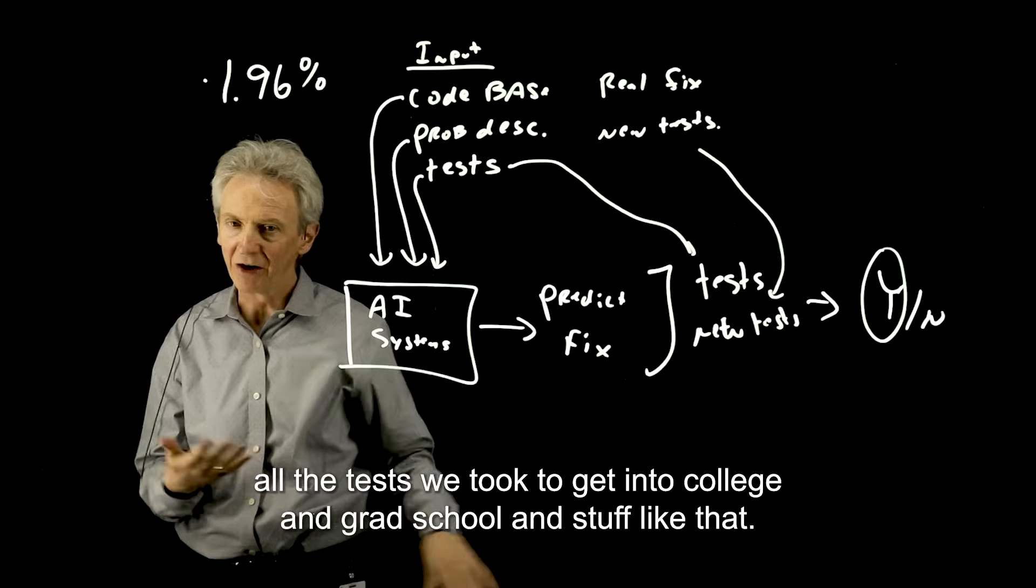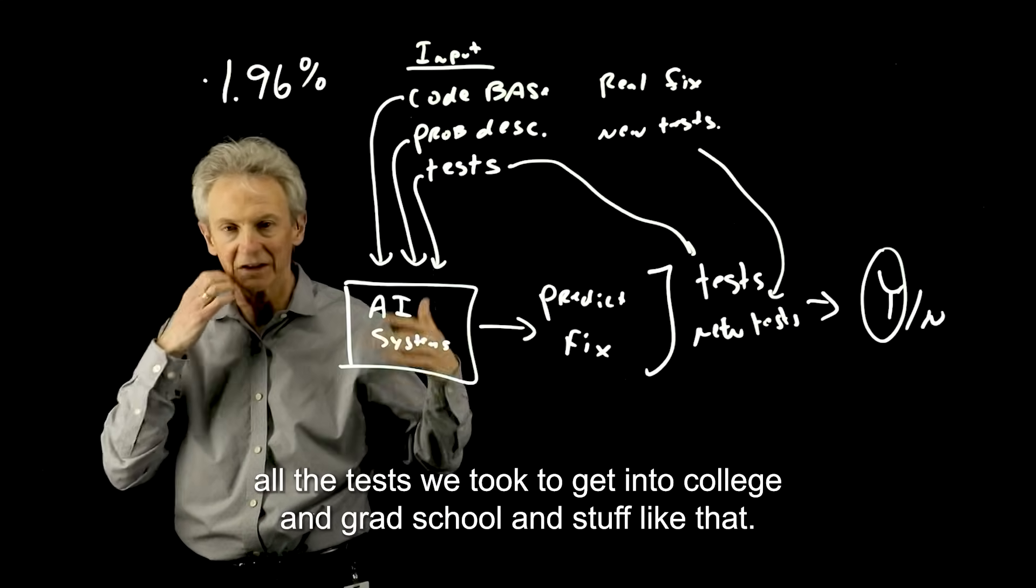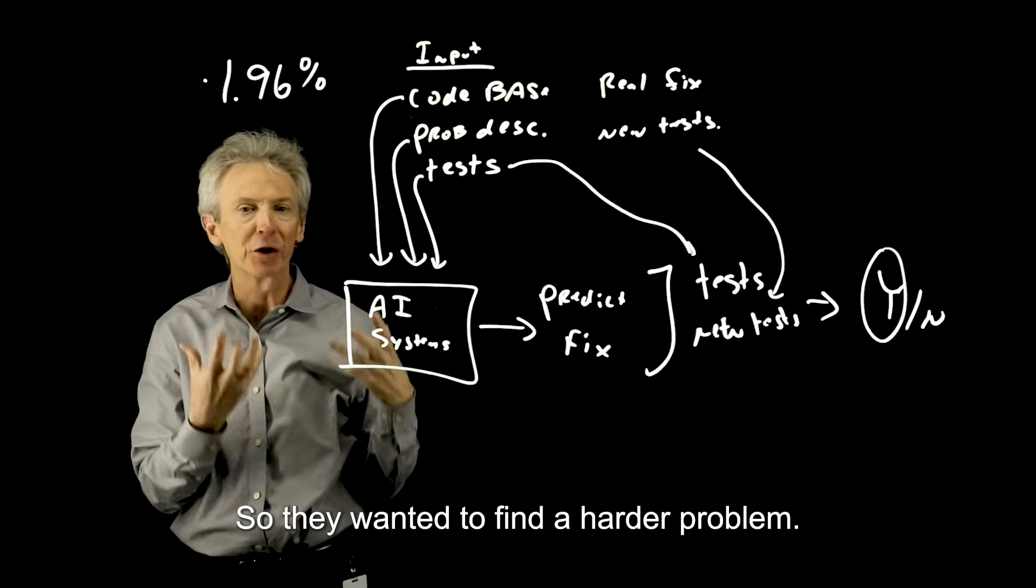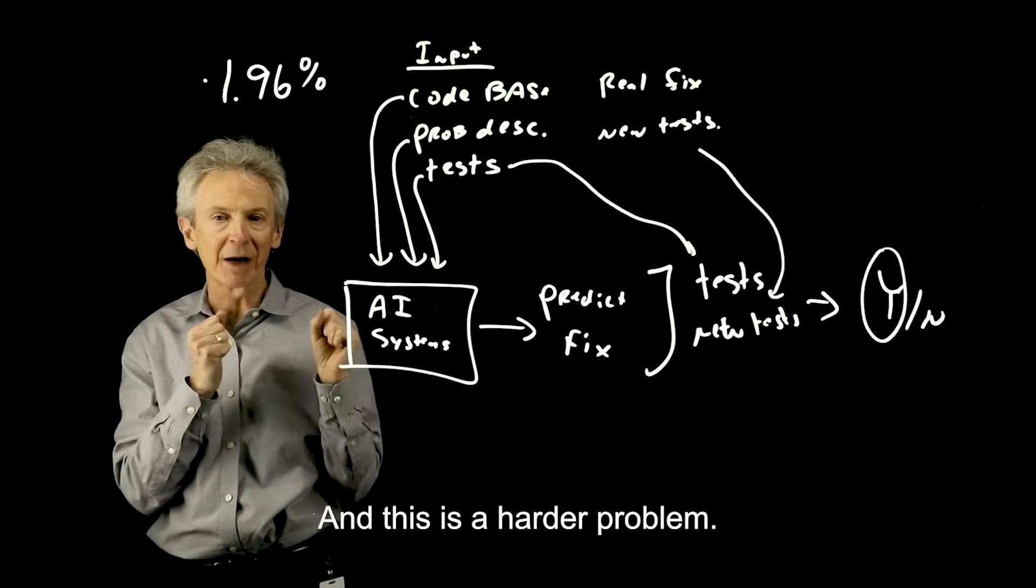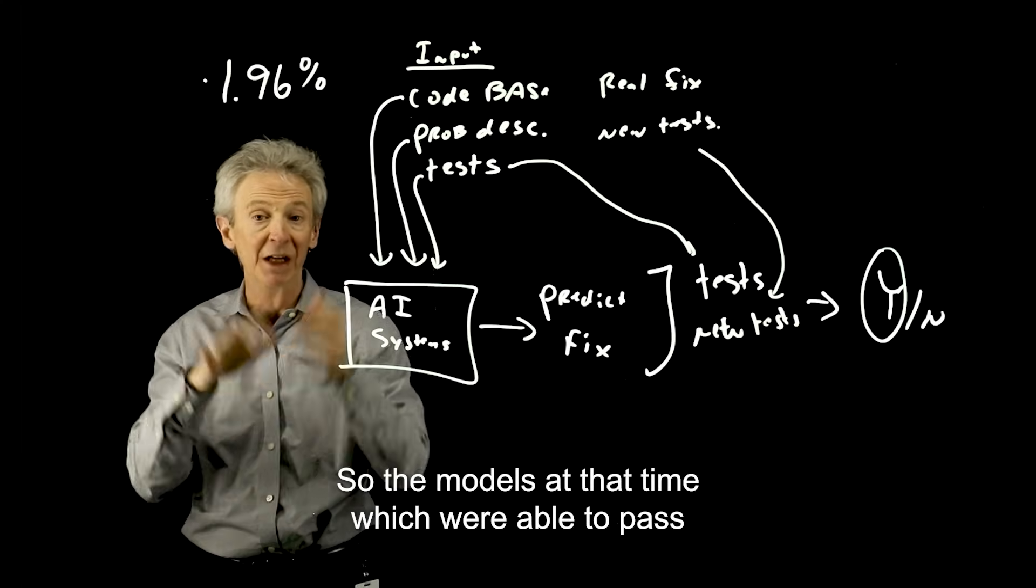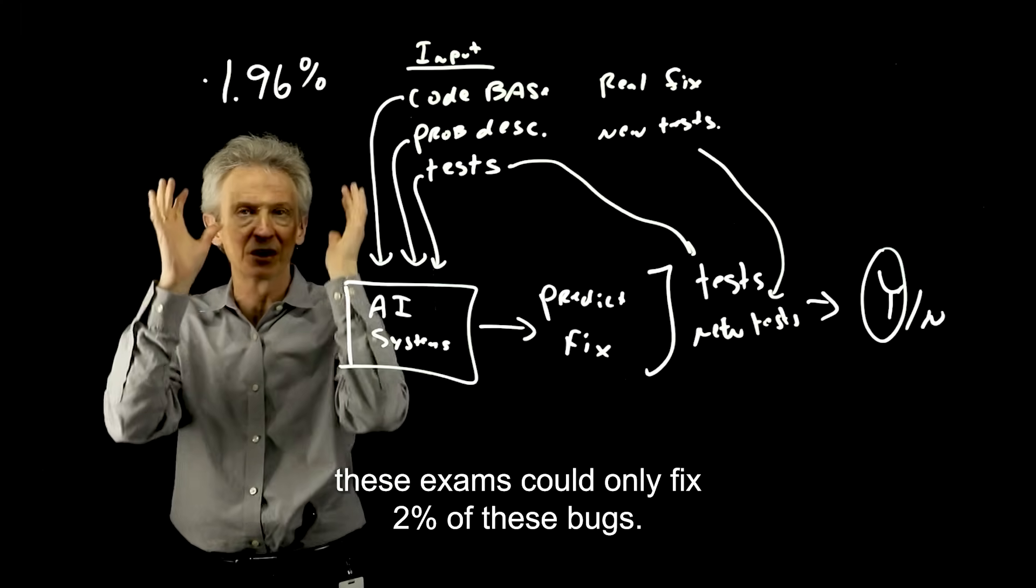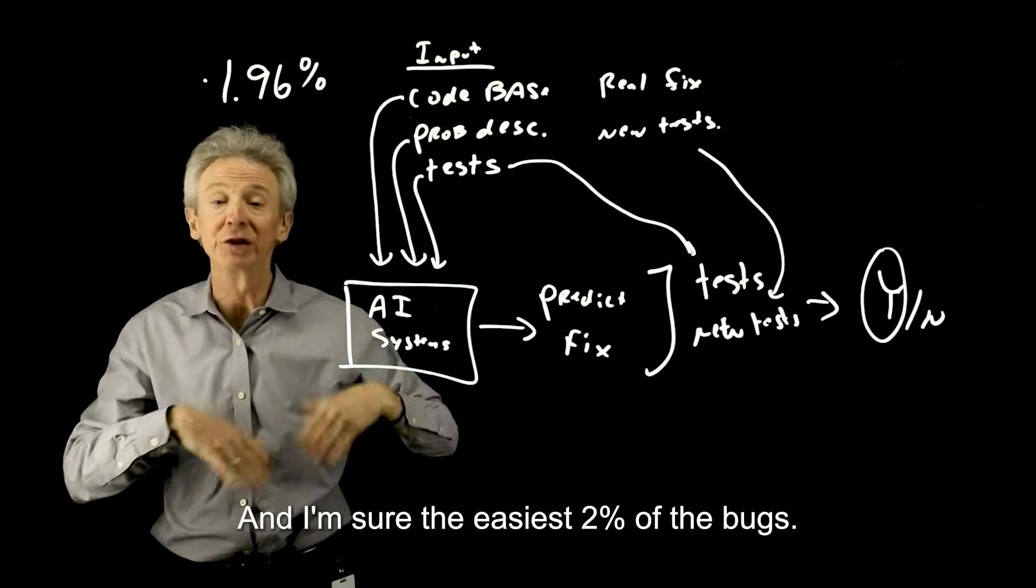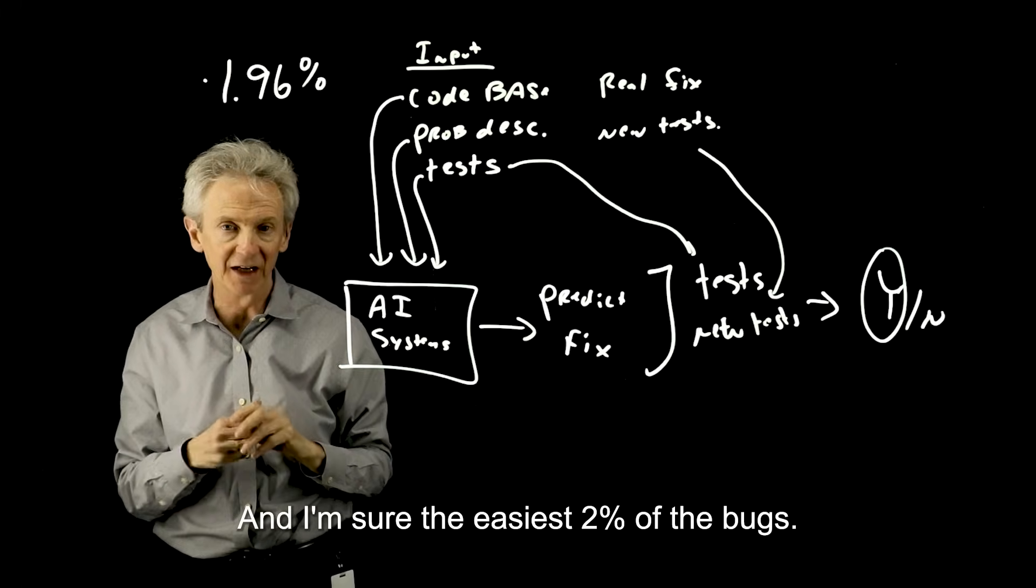all the tests we took to get into college and grad school and stuff like that. So they wanted to find a harder problem. And this is a harder problem. So the models at that time, which were able to pass these exams, could only fix 2% of these bugs, and I'm sure the easiest 2% of the bugs.